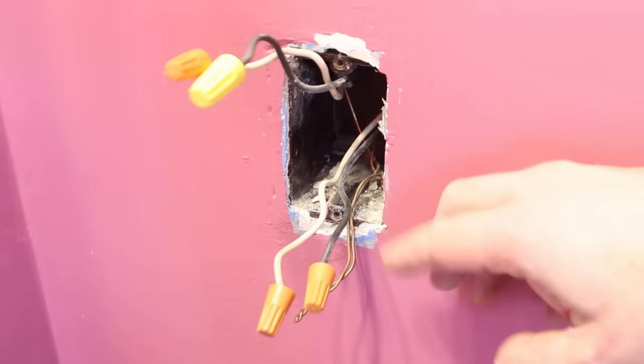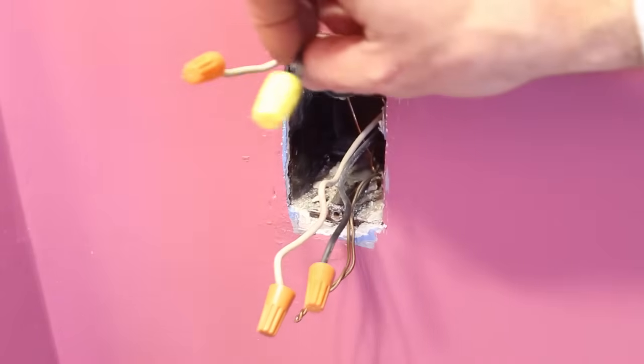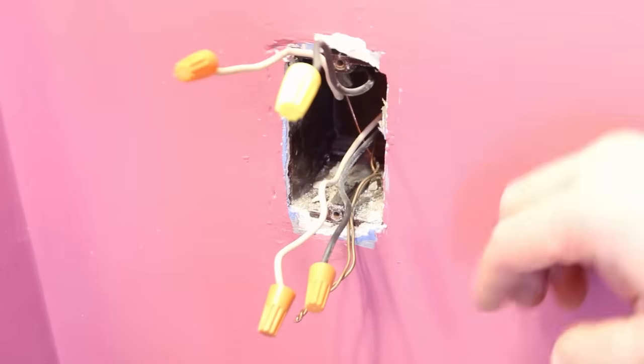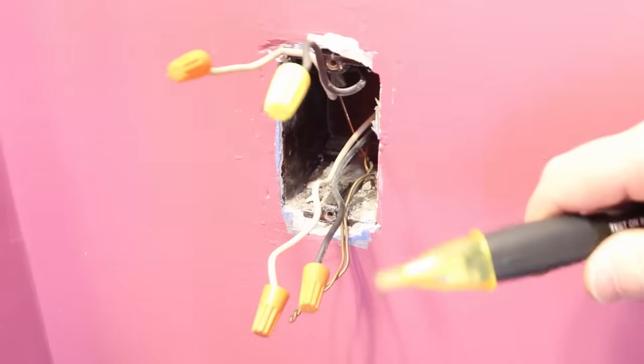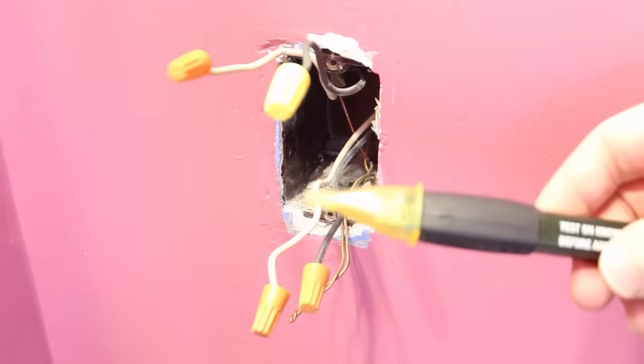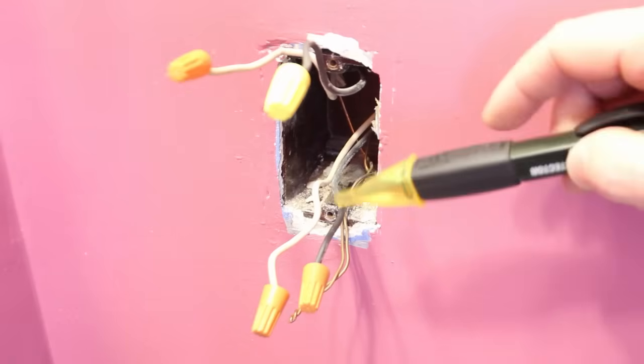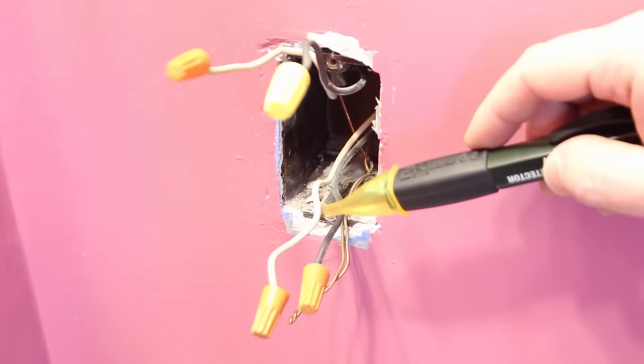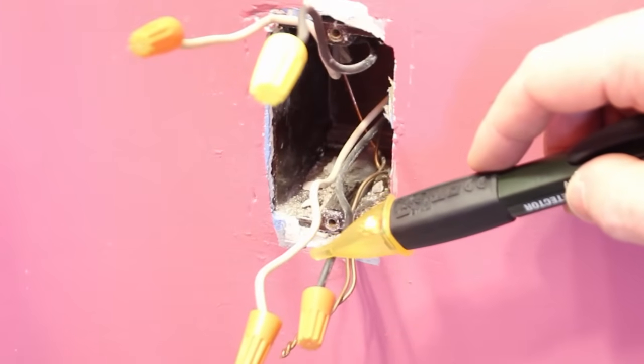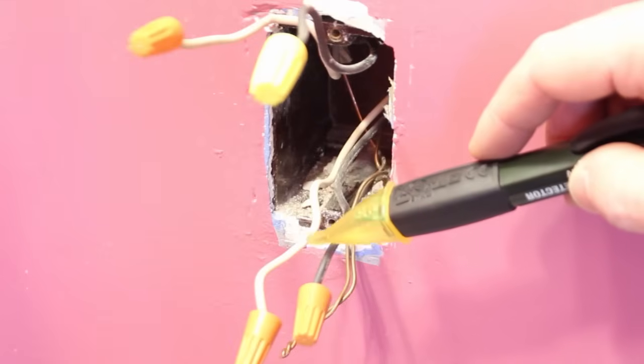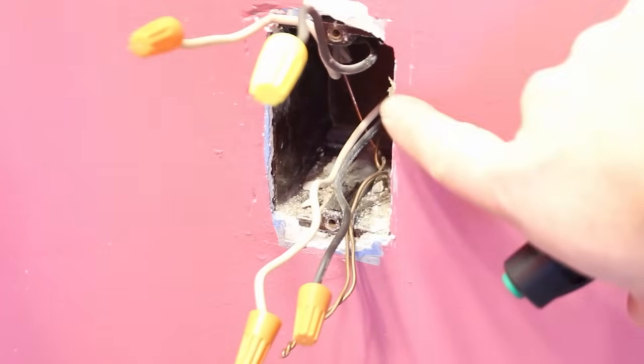But that's not always the case. So I'm going to turn the electricity back on now that these wires are capped and away from each other, and test which set actually has electricity running to them. With the electricity back on and my voltage detector handy, I'm going to test to see which are the line wires and which are the loads. Put your voltage detector up against the hot wire. And sure enough, the one on the bottom here, that is the line wire. These are the line wires that carry electricity into the electrical box.